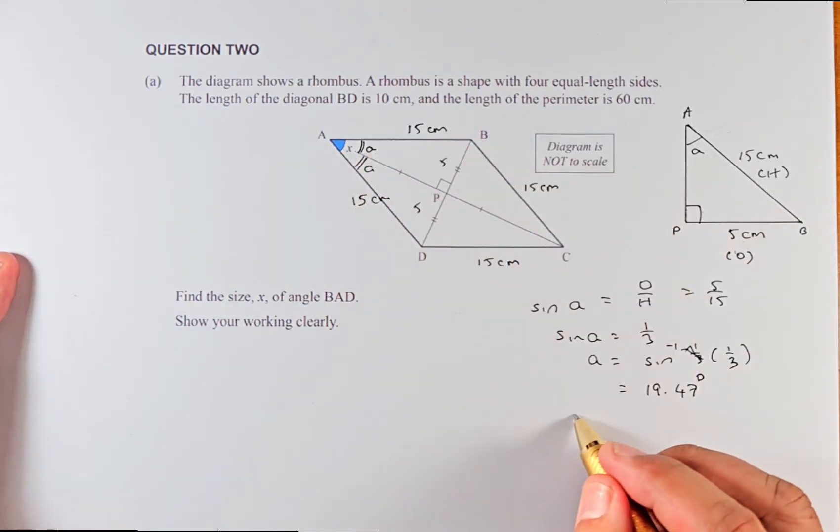Because x is made up of 2a, we need to get 2 multiplied by 19.47 degrees, and the answer for this question is going to be 38.94 degrees.